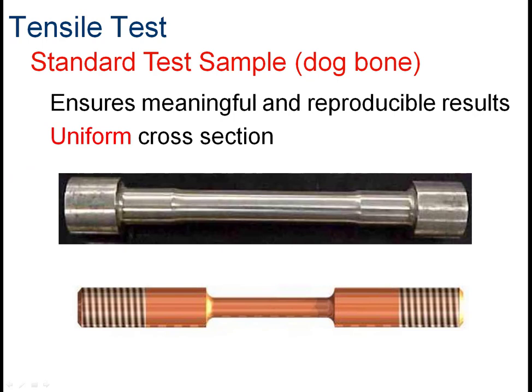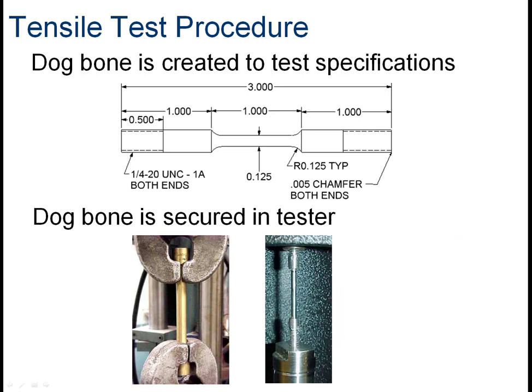The dog bone has a uniform cross-section, which is important because we're going to look at the force adjusted for the cross-sectional area, so we need that to be uniform. Our class dog bone sample is a small quarter-20 threaded piece with a shaft turned down to one-eighth of an inch — about half the diameter — so the material will rupture in that neck region. The dog bone is mounted in the tester and then pulled apart.